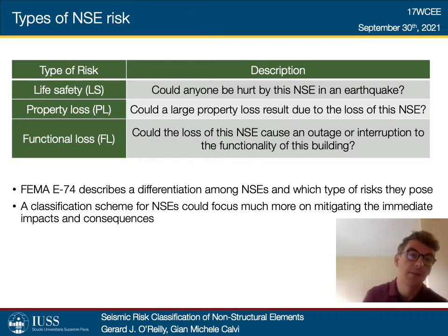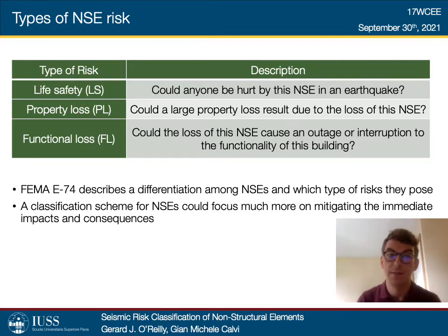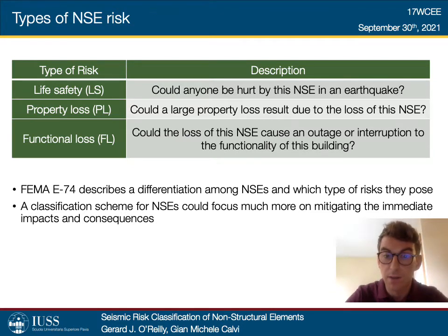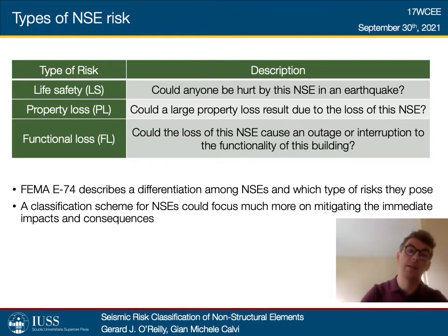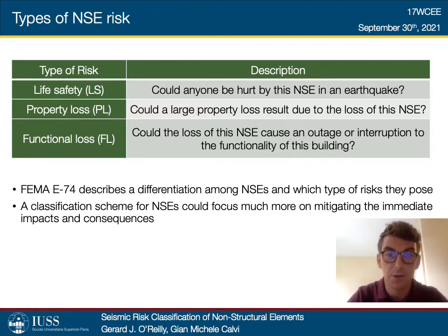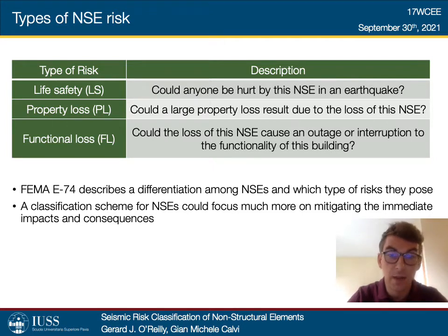The different kinds of non-structural risk have been described in FEMA E-74 and essentially we have three different kinds: life safety risk, property loss, and functionality loss. Can anybody be hurt by a non-structural element in an earthquake? Could we have a large property loss or financial implication? And could the loss of this non-structural element cause an outage or interruption with a big impact on the building's functionality? A classification scheme accounting for these is what we're targeting here.